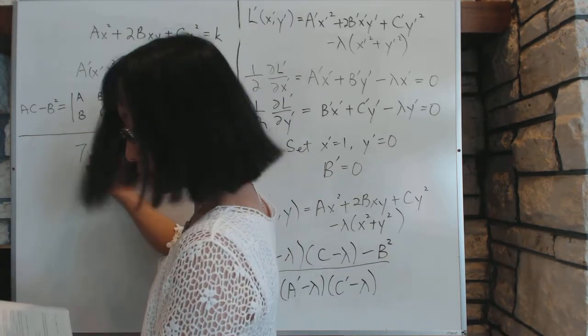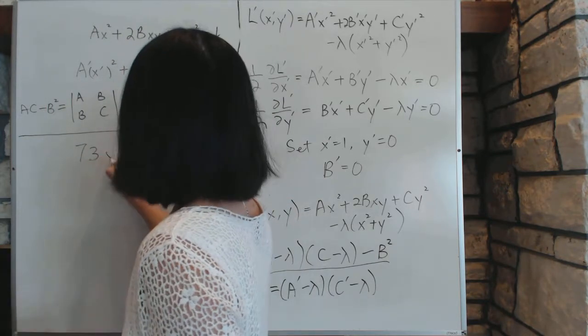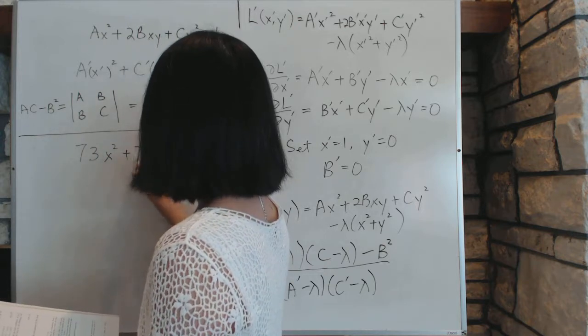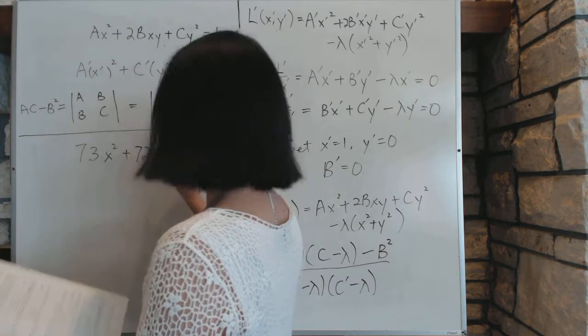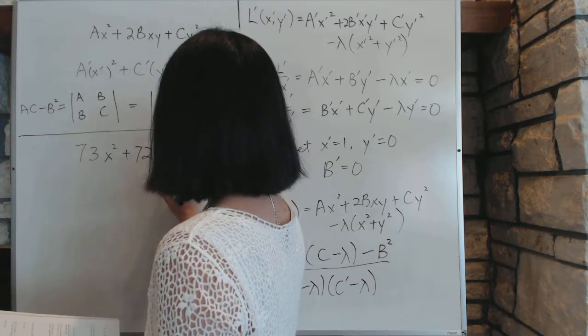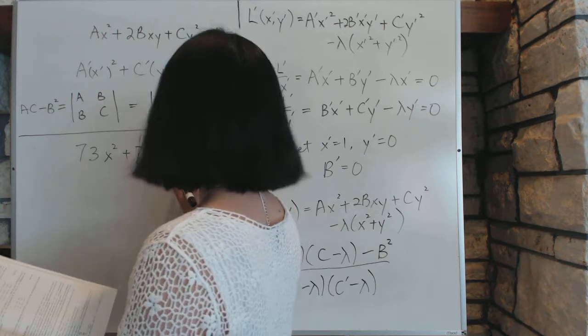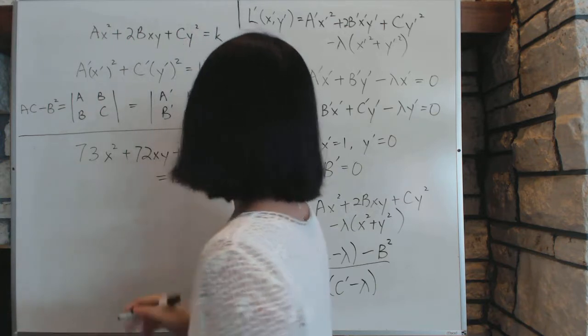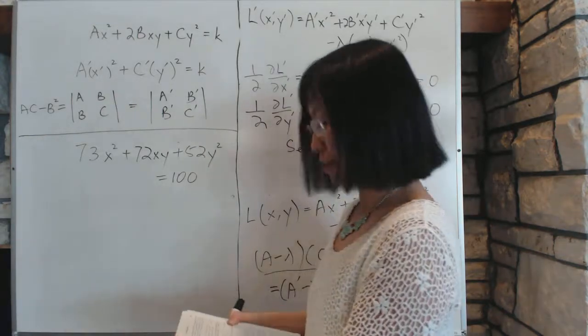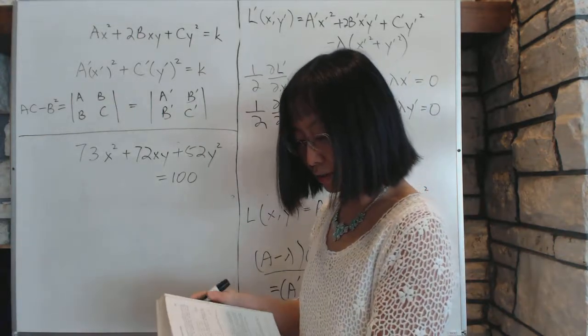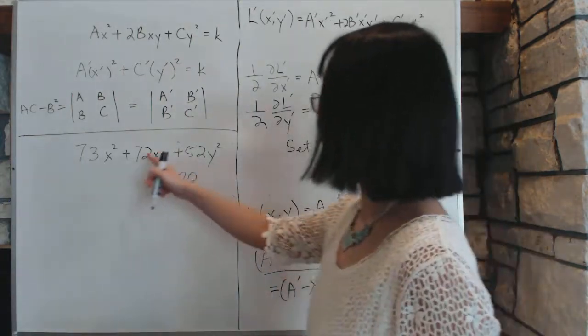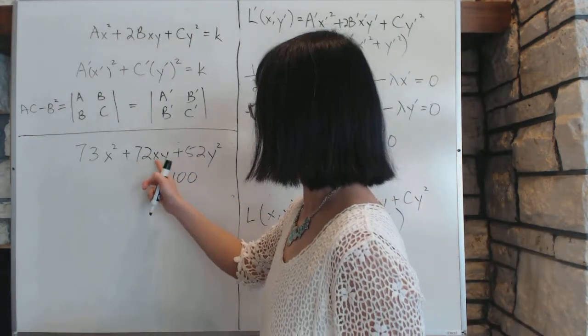For example, let's say you have an ellipse that looks like this, a complicated looking ellipse: 73x squared plus 72xy plus 52y squared equal to 100. Okay, this is an ellipse and it's tilted, and we don't know what it really looks like that much because it's tilted. Now we want to find out to change it into a format where we get rid of this thing by changing the coordinate, turning the coordinates.